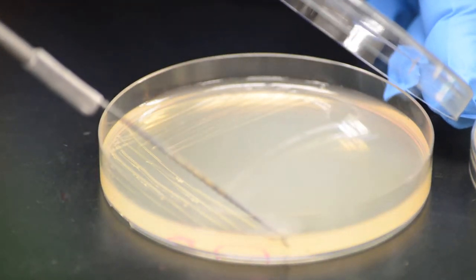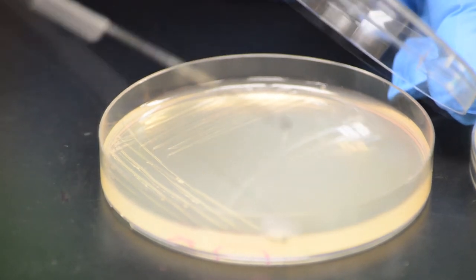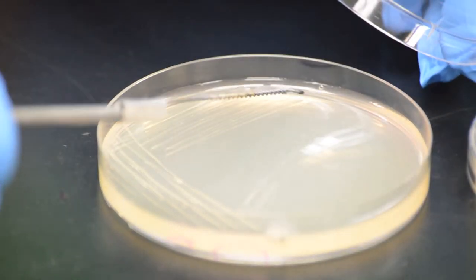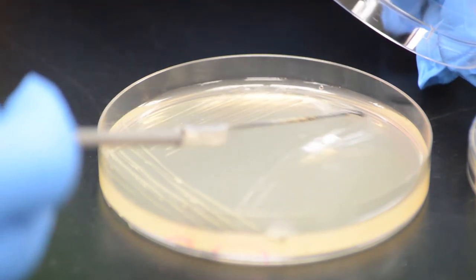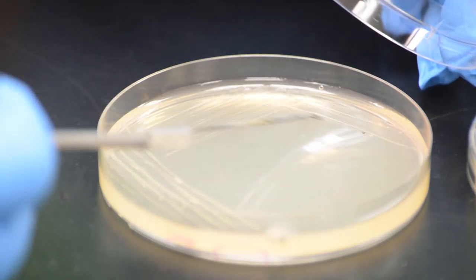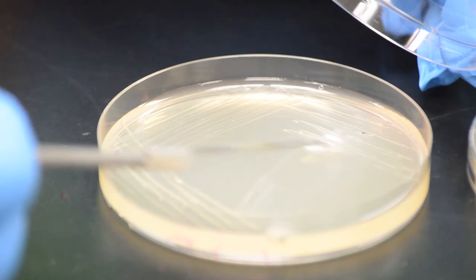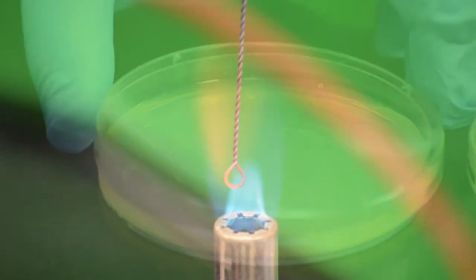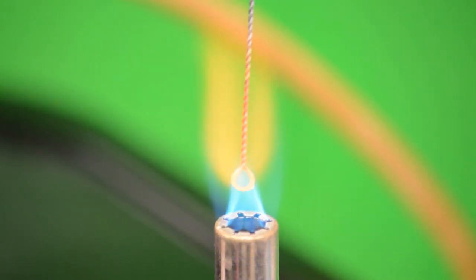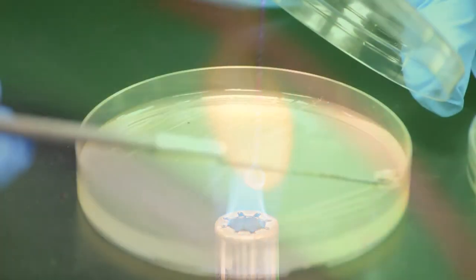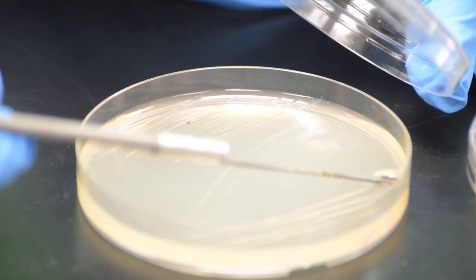Remember, there are many patterns that can be used for a streak plate. In our experience, the best results can be obtained if you only pull the loop through the last streak once or twice. This allows for maximum dilution of the culture; in other words, you decrease the number of cells being spread after each set of streaks.